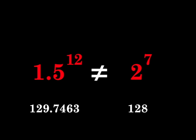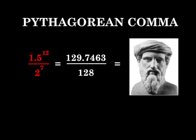It is a small but noticeable difference between an interval of 12 just fifths and 7 octaves. The Pythagorean comma is equal to approximately a quarter of a semitone. The word comma means an act of cutting. It signifies the small portion that must be trimmed away in order for fifths and octaves to fit neatly together.